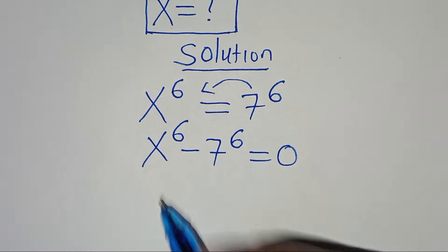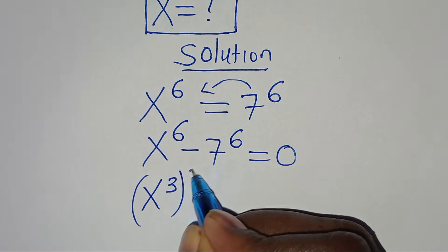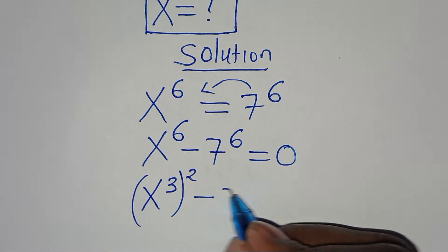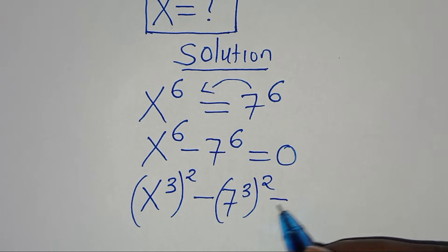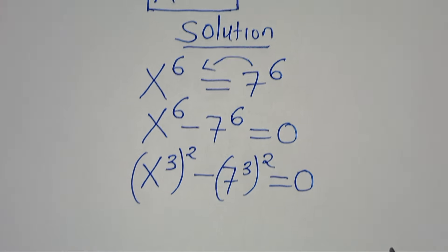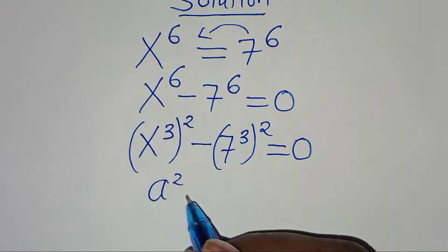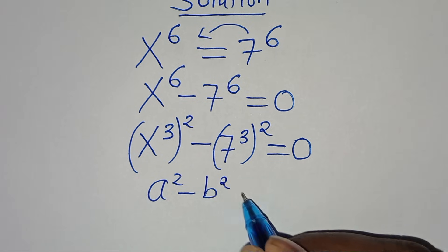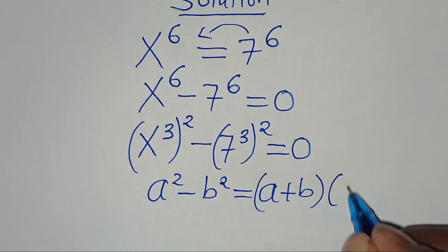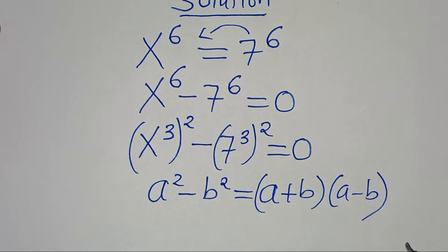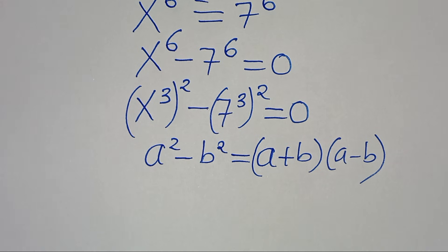We can express x to the power of 6 as x to the power of 3 raised to the power of 2, minus 7 to the power of 6, which is 7 to the power of 3 raised to the power of 2, this is equal to 0. This equation here is of the form a squared minus b squared, which we can express as a plus b multiplied by a minus b.